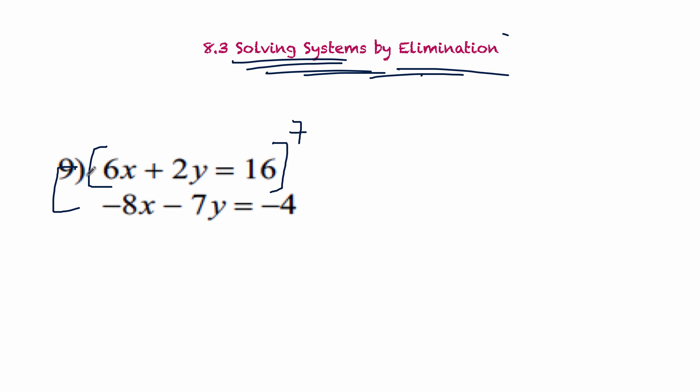So I'm going to multiply the top equation by 7. That means multiplying everything in the top equation. So we're going to get 42x plus 14y equals 112. That's going to be 7 times 16. On the bottom, we're focusing on the y's. We want that to be a 14, so we're going to multiply by 2. So we get negative 16x minus 14y equals negative 8. Notice in the middle here, we have 14y and a negative 14y. That is what elimination is. Now we add the two equations.